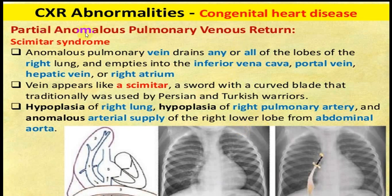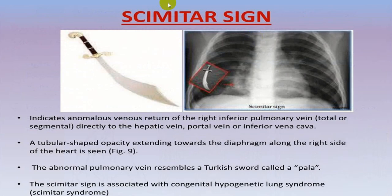Partial anomalous pulmonary venous drainage — scimitar syndrome: this gives rise to a typical shadow on the right side resembling a scimitar. It is an anomalous pulmonary vein draining any or all lobes of the right lung, emptying into the inferior vena cava, portal vein, hepatic vein, or right atrium. That particular vein gives rise to the typical scimitar sign — partial anomalous pulmonary venous drainage of the right lung.